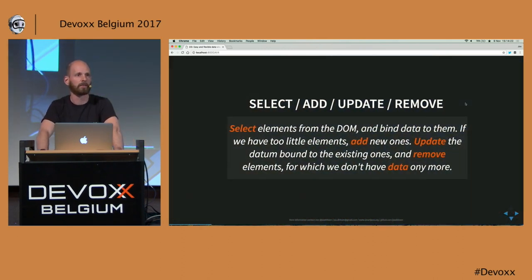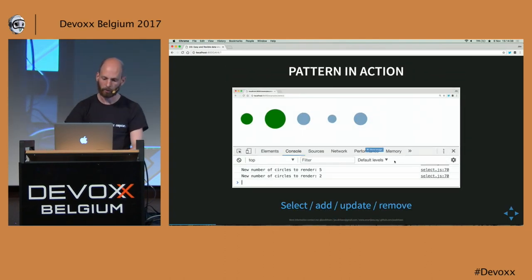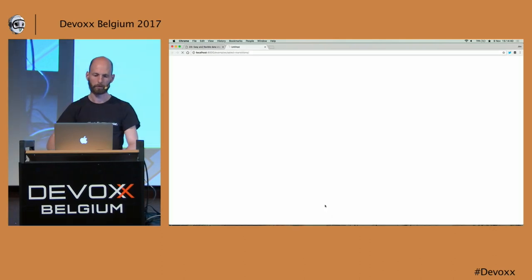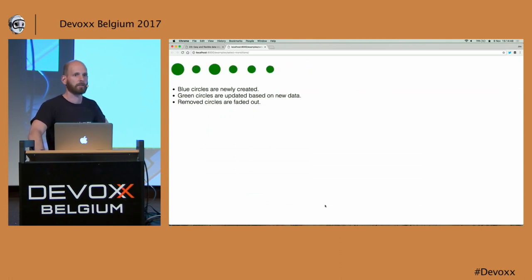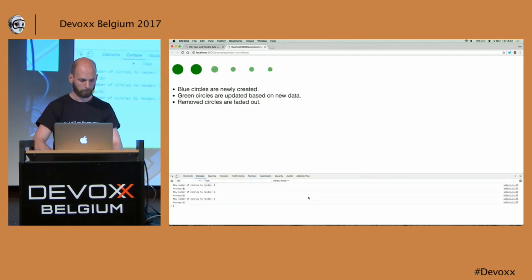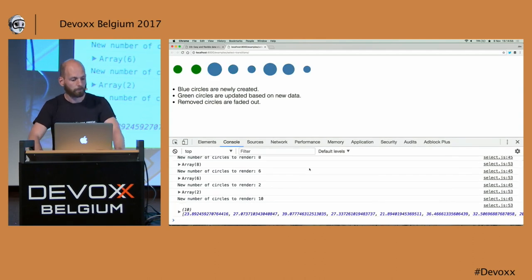Basically, this pattern involves: you select elements, you bind data, you create new elements, you update existing elements, and you might even remove elements for which no data is available. I created a demo which has a number of circles — any time you see a demo of D3, it always starts with something like this. What happens is we generate some data, and for each of these elements, we generate a circle.